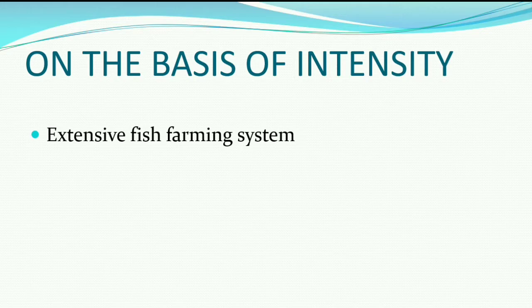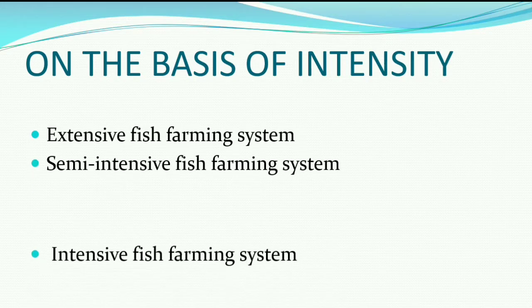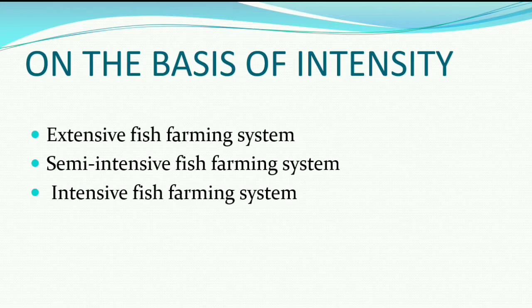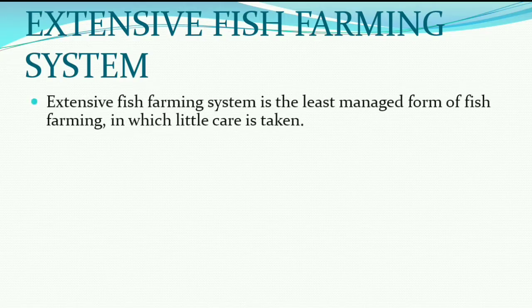On the basis of intensity, aquaculture is divided into: extensive fish farming system, semi-intensive fish farming system, and intensive fish farming system. Extensive fish farming is usually a traditional system where farming is done simply in a pond or lake. It is the least managed form of fish farming in which little care is taken — fish are stocked and left to grow, then captured.